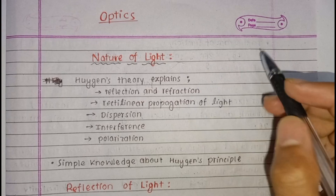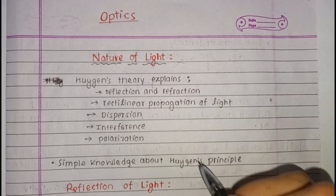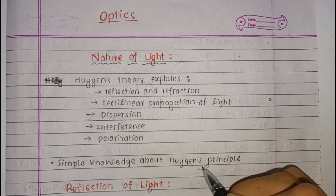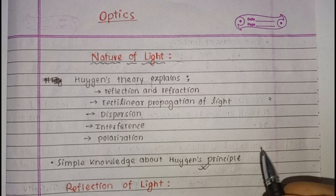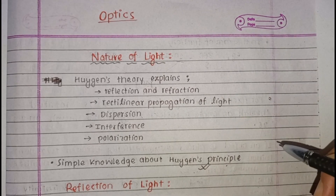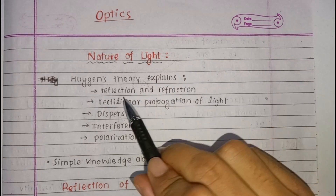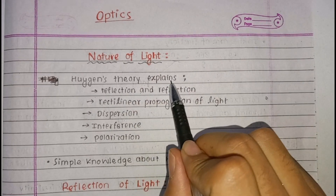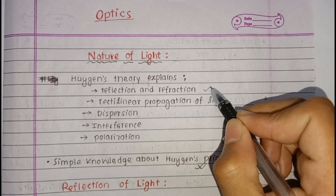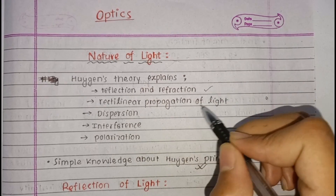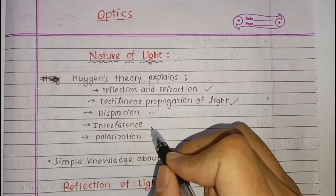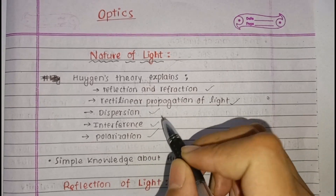Nature of Light covers the Eigens Principles. Eigens Theory explains topics including Reflection, Refraction, Rectilinear Propagation of Light, Dispersion, Interference, and Polarization.